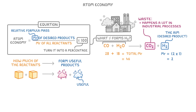So to find the atom economy of this reaction, we take our MR of hydrogen, because that's our desired product, and divide it by 46, because that's the MR of all of our reactants. Then finally we multiply the whole thing by 100 to turn it into a percentage, giving us an atom economy of 4.35%. 4.35% is actually a pretty low atom economy, because it means that only 4.35% of the reactants are being turned into the useful product that we want, whereas the other 95.65% is being given off as waste.